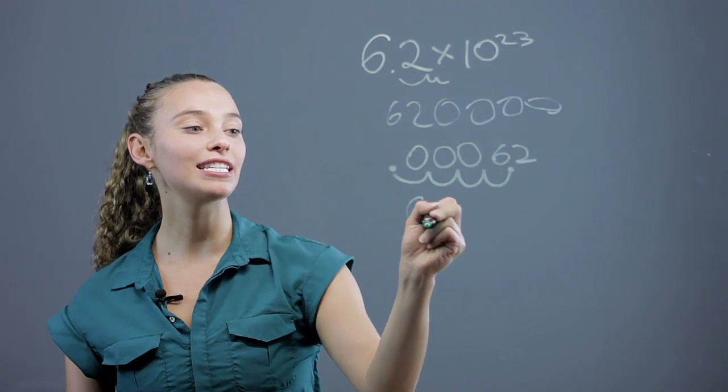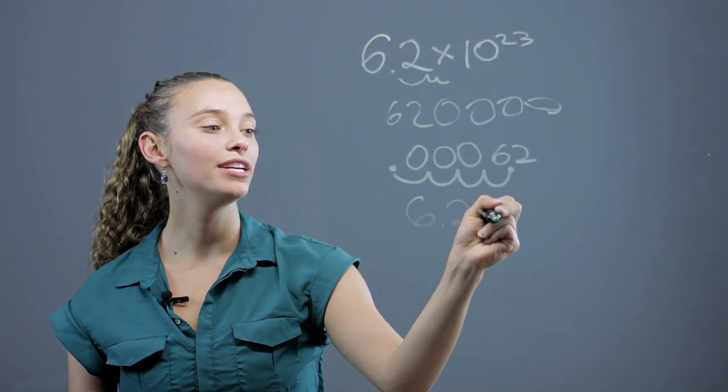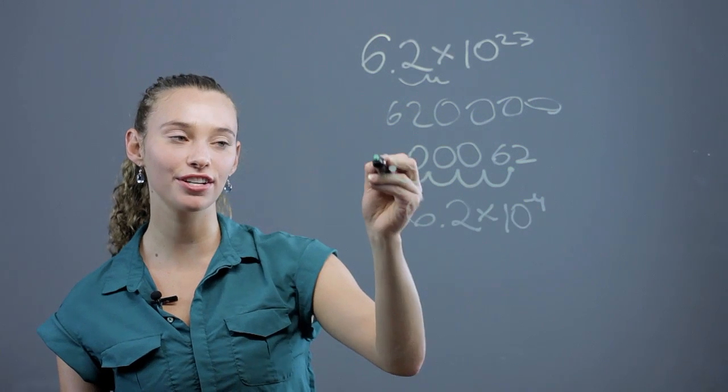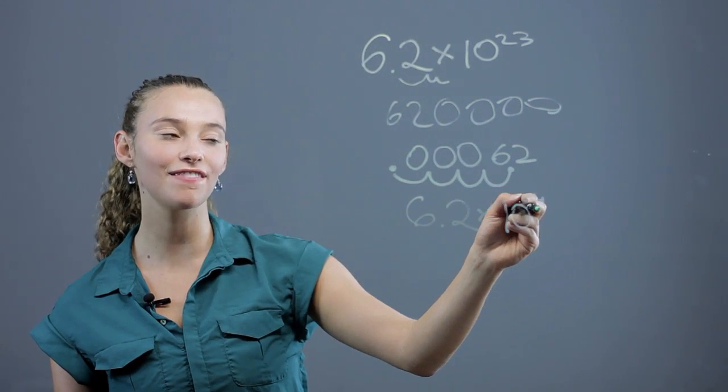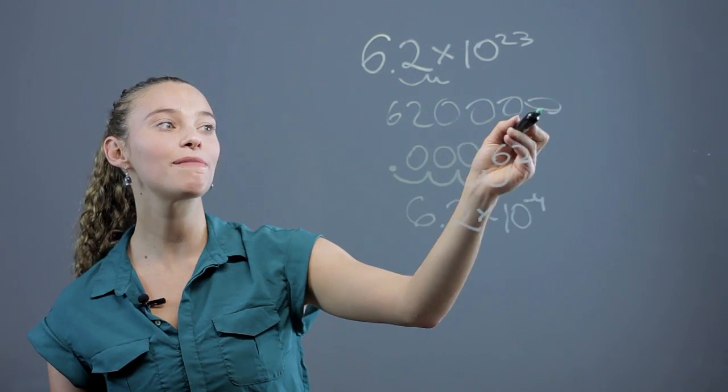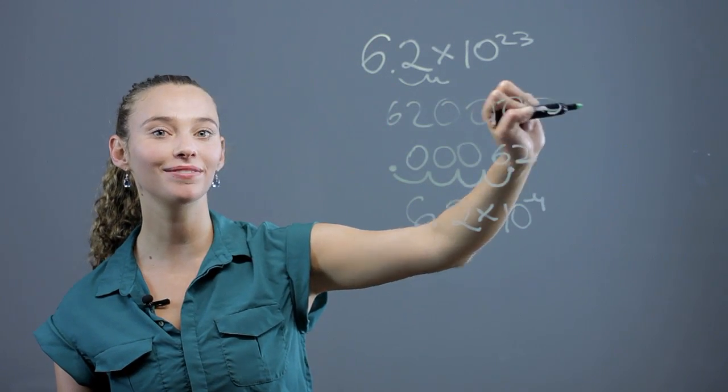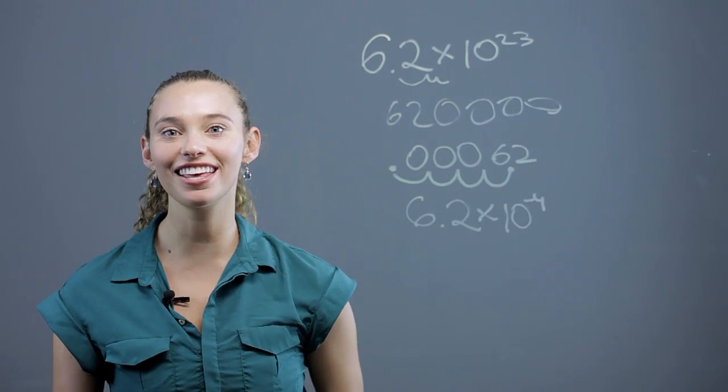So that is going to be written as 6.2 times 10 to the negative fourth when in standard form, because you're going the opposite way so you have a negative exponent, whereas here you have a positive exponent because the zeros are all to the right. I'm Rachel and thanks for learning with us today.